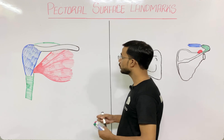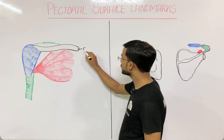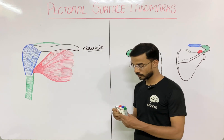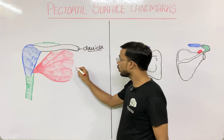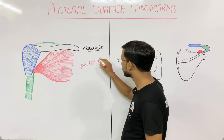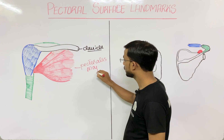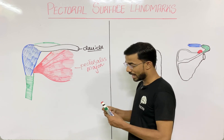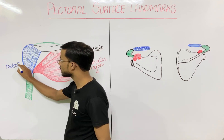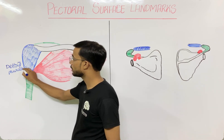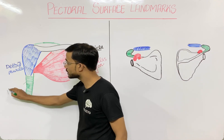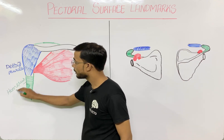Here we can see the clavicle, also known as the collar bone. Below it is the pectoralis major muscle. At the other side you will see the presence of the deltoid muscle. And below you will see the presence of the humerus bone.